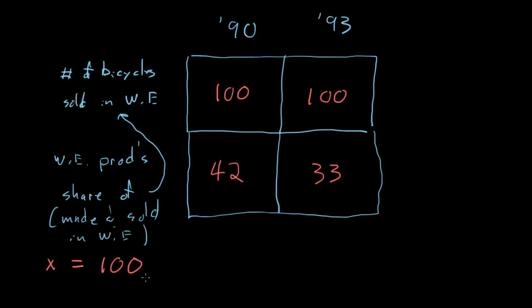What does this mean for the question? The question asks, which of the following represents the decrease in the annual number of bicycles produced and sold in Western Europe? So that's just the decrease in these numbers. This is the number that was produced and sold in 90. This is the number that was produced and sold in 93. So if x is 100, the answer to our question, the decrease in the number produced and sold is just 42 minus 33, which is 9.